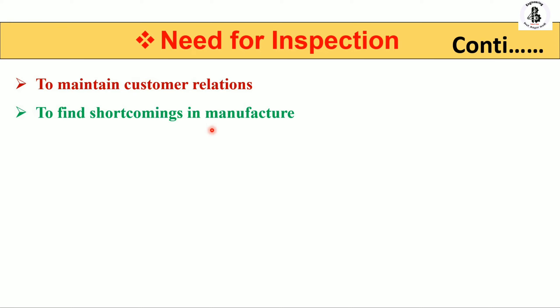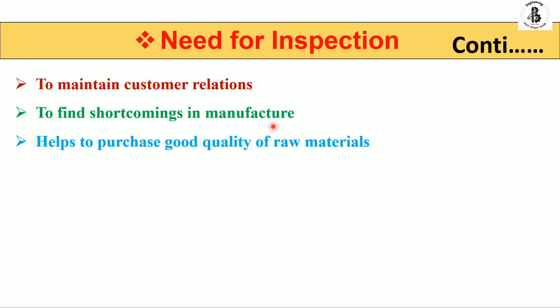The tenth point is to find shortcomings in manufacture and to help purchase good quality raw materials. Inspection should be carried out at every stage — you can apply it to raw materials, during the working process, or after the finished product. Whatever you purchase, inspect it to determine whether it meets your quality requirements. The quality of raw materials depends on the working conditions of the components, and selection criteria for raw materials must also be inspected to verify they meet requirements.